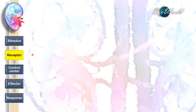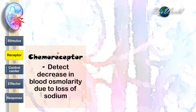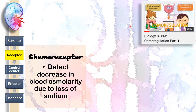The decrease in blood osmolarity will be detected by a chemoreceptor. This chemoreceptor detects the decrease caused by the loss of sodium. Do not mistake this with the chemoreceptor that detects decrease in blood osmolarity due to excess water — I have discussed the regulation of water and the chemoreceptor involved, which is the hypothalamus, in my video on Osmoregulation Part 1. You can view that video to take note of the difference.